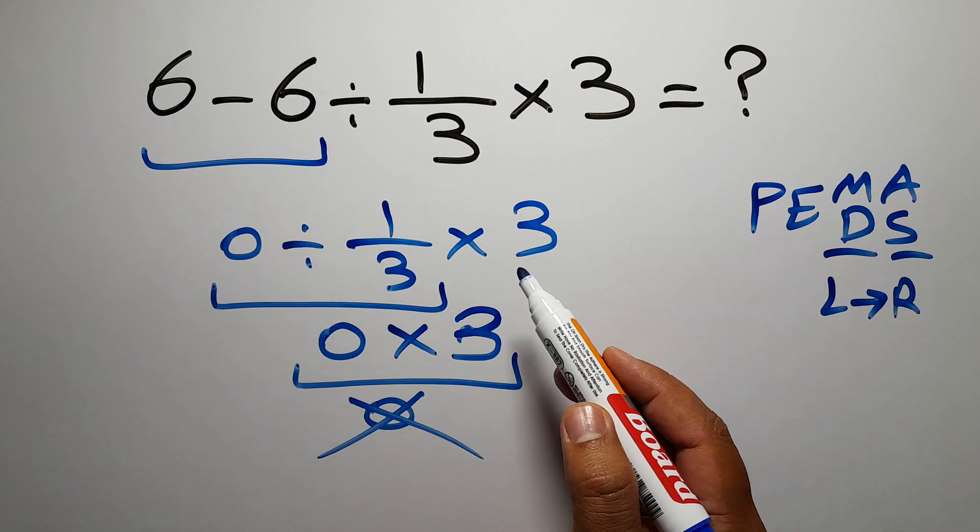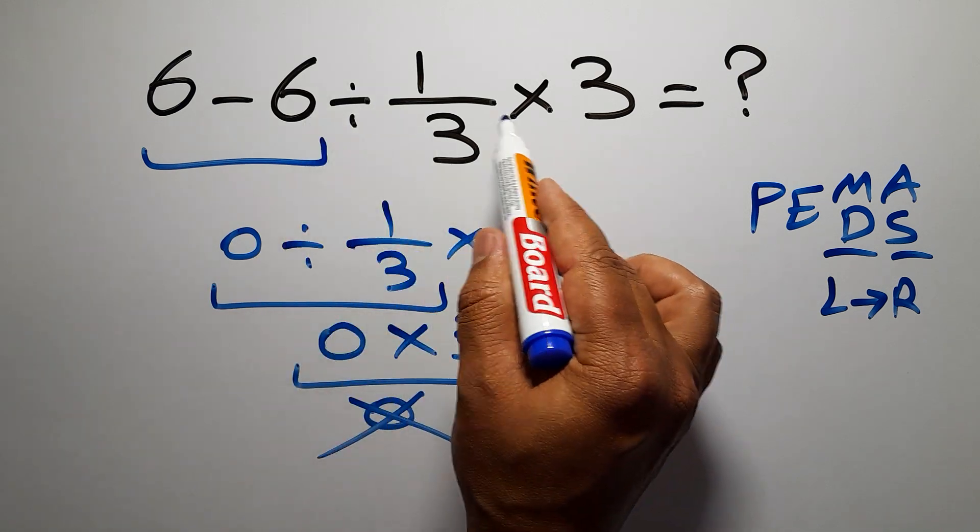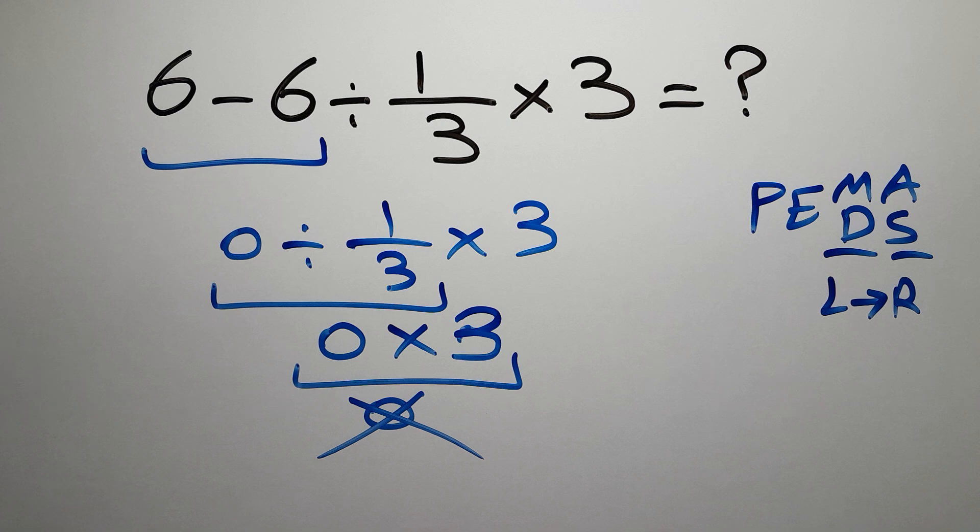So first we have to do this division, not this subtraction. So first this division, then this multiplication, and finally this subtraction.